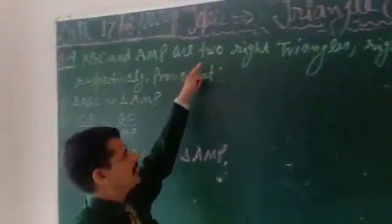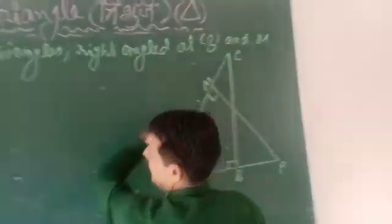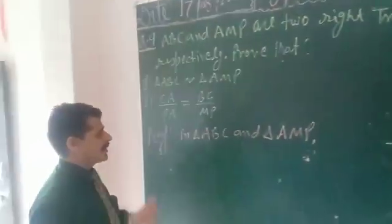ABC and AMP are two right triangles, right angled at B and M respectively. We have to prove here there are two things.